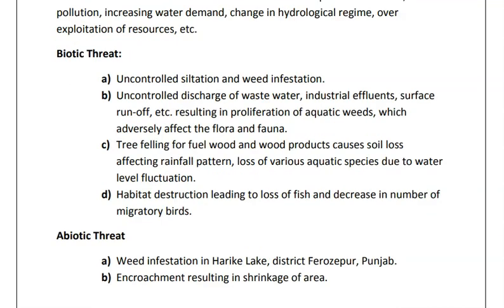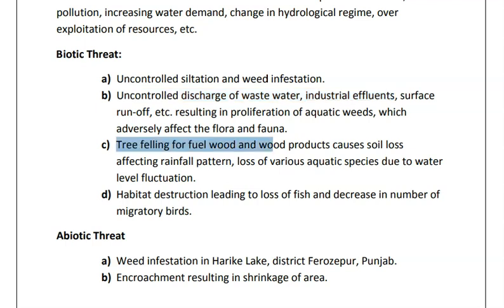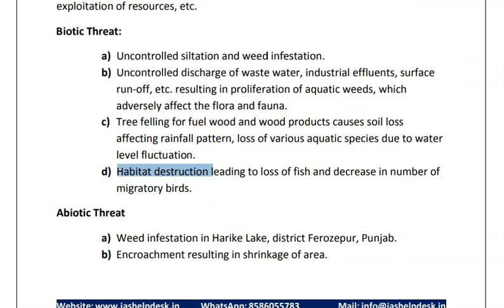The threats have been divided into biotic and abiotic. Biotic threats include uncontrolled siltation and discharge of wastewater and industrial effluents. If the pollution level is increasing in the wetland, it will not be able to filter as per its capacity, and the wetland water will become more polluted, unable to support habitat for different aquatic flora and fauna. Deforestation and soil erosion are also affecting the wetland ecosystem, and growth of the tourist sector and formation of roads is leading to habitat destruction. Abiotic threats include weed infestation and encroachment, leading to shrinkage of wetland area.